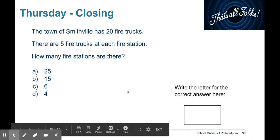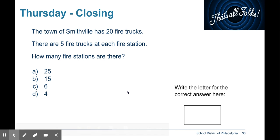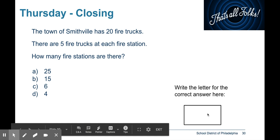The question says: The town of Smithville has 20 fire trucks. There are 5 fire trucks at each fire station. How many fire stations are there? Your choices are A: 25, B: 15, C: 6, or D: 4. Solve it however you want to figure out how many fire stations there are and write your correct letter.